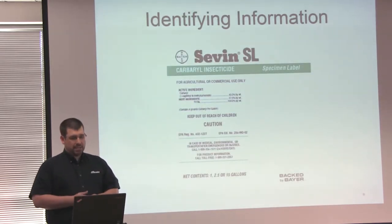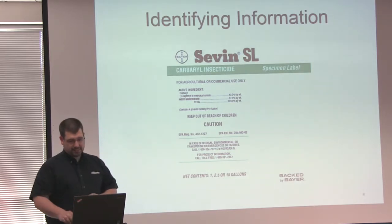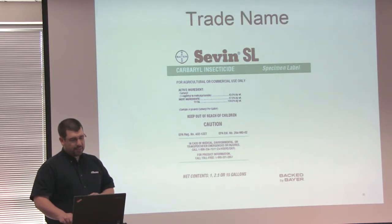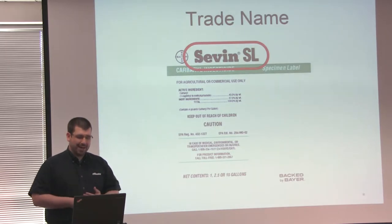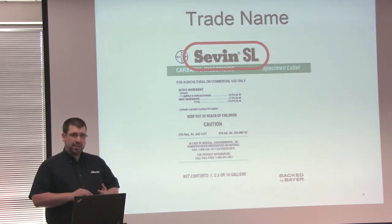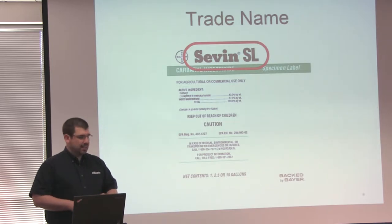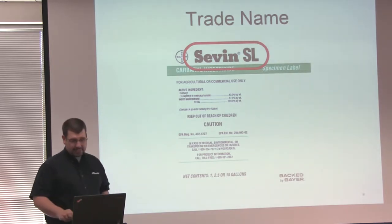Now let's take a look at the front page of the label. On the front page, there is various different identifying information. The first one is the trade name — this is the name that everybody knows the pesticide by. It's the one that's used by your dealer, your salesperson, and even by yourself to identify what the pesticide is.